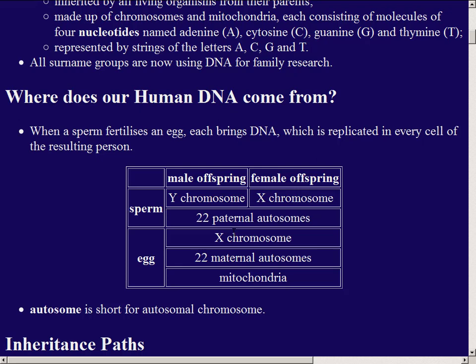The Y chromosome is much easier for genealogy. It comes from the father, the father's father, the father's father's father, and so on. In most cultures the surname also comes down the father's line, following the same male line as the Y chromosome.